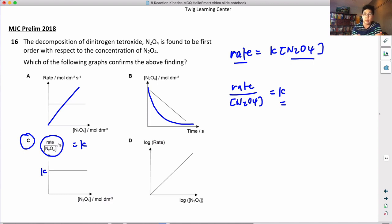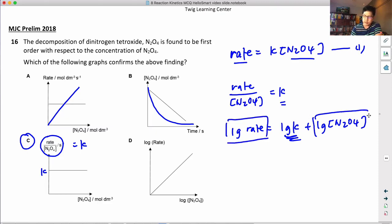What you need to do is take logarithm on both sides of this equation. It looks like log rate - sorry, log rate equals log K plus log N2O4. So if that's the case, this is like your y-intercept. You're plotting log rate versus this, and this becomes the y-intercept, which means the graph should actually look something like this. It doesn't cut through the origin, so D is also wrong. So answer is C.